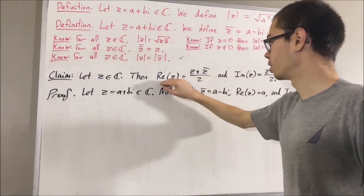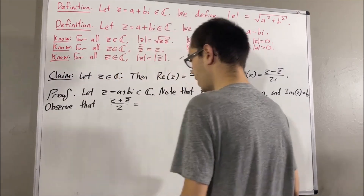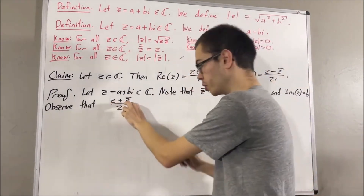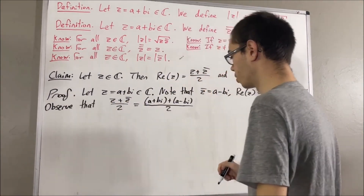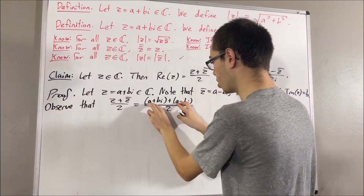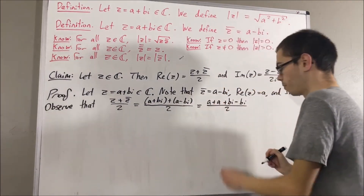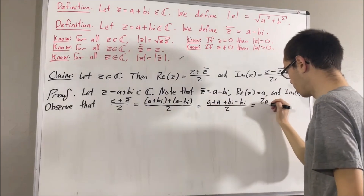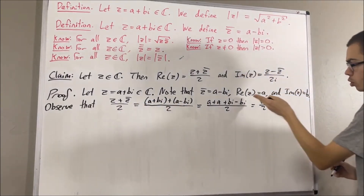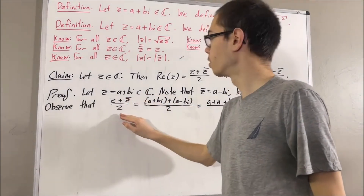Let's simplify z plus z bar over 2 down to a. We substitute z equals a plus bi and z bar equals a minus bi. The numerator immediately simplifies: grouping together the real parts gives a plus a, and the imaginary parts give bi minus bi. This simplifies to 2a, so we get 2a over 2, which equals a. This expression simplifies to a, which is equal to the real part of z. So we have shown that the real part of z equals z plus z bar over 2.